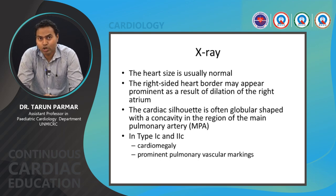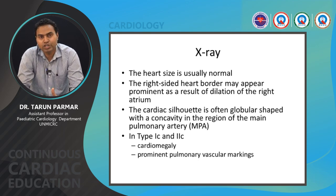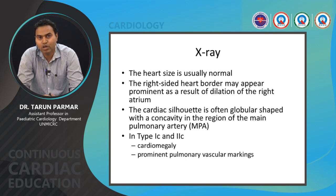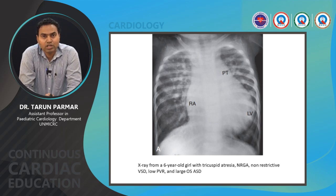On chest X-ray, heart size is usually normal. The right heart border may appear prominent due to a dilated right atrium. The cardiac silhouette is often globular with concavity in the region of the main pulmonary artery — this pulmonary bay is due to pulmonary stenosis or atresia. In Type 1C and 2C situations with transposition and large VSD with increased blood flow, there is cardiomegaly and prominent pulmonary vascular markings. An example X-ray of a six-year-old female with tricuspid atresia in NRGA with non-restrictive VSD shows RA enlargement, prominent right heart border, enlarged pulmonary trunk, and situs solitus levocardia.